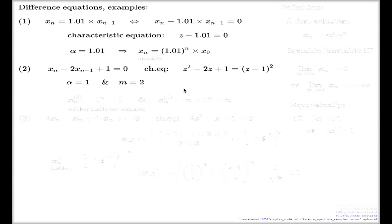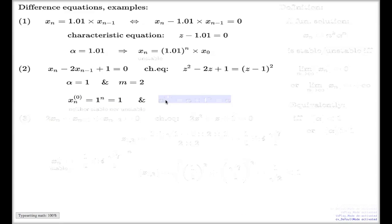So, according to the lemma, we're having two fundamental solutions. One of them is this one, and the other one is this one — the other solution we guessed together before. Any other solution will be a linear combination of these two, to meet any particular initial condition.